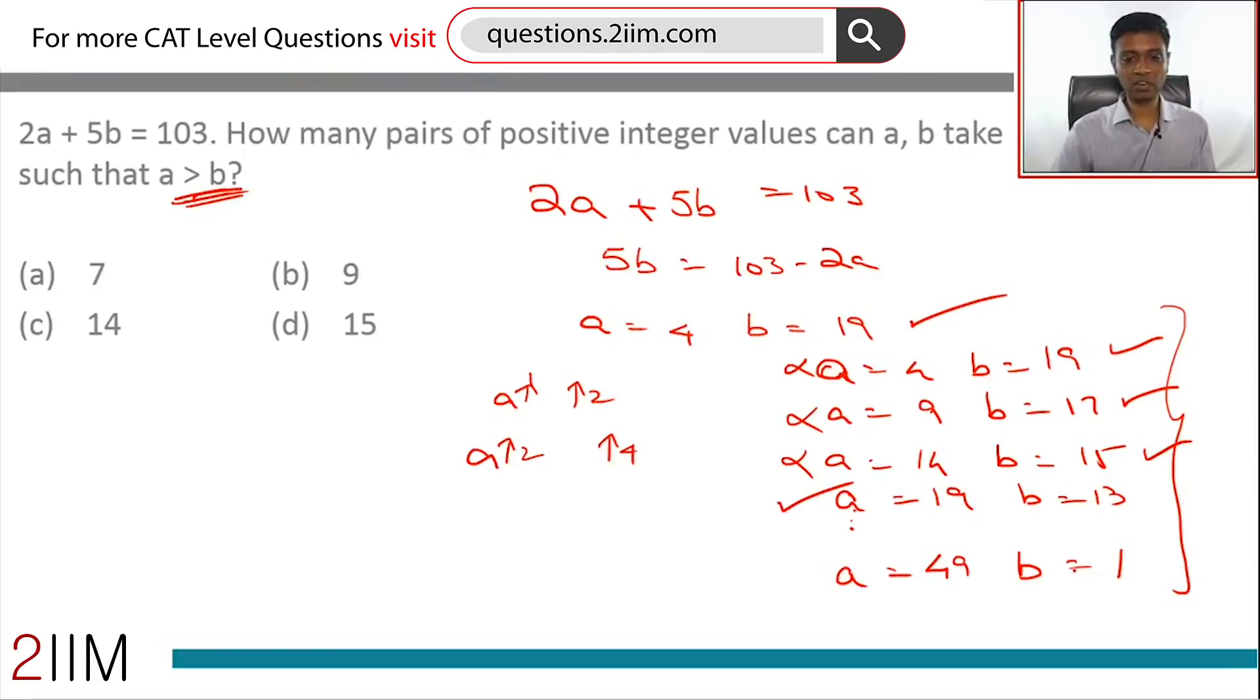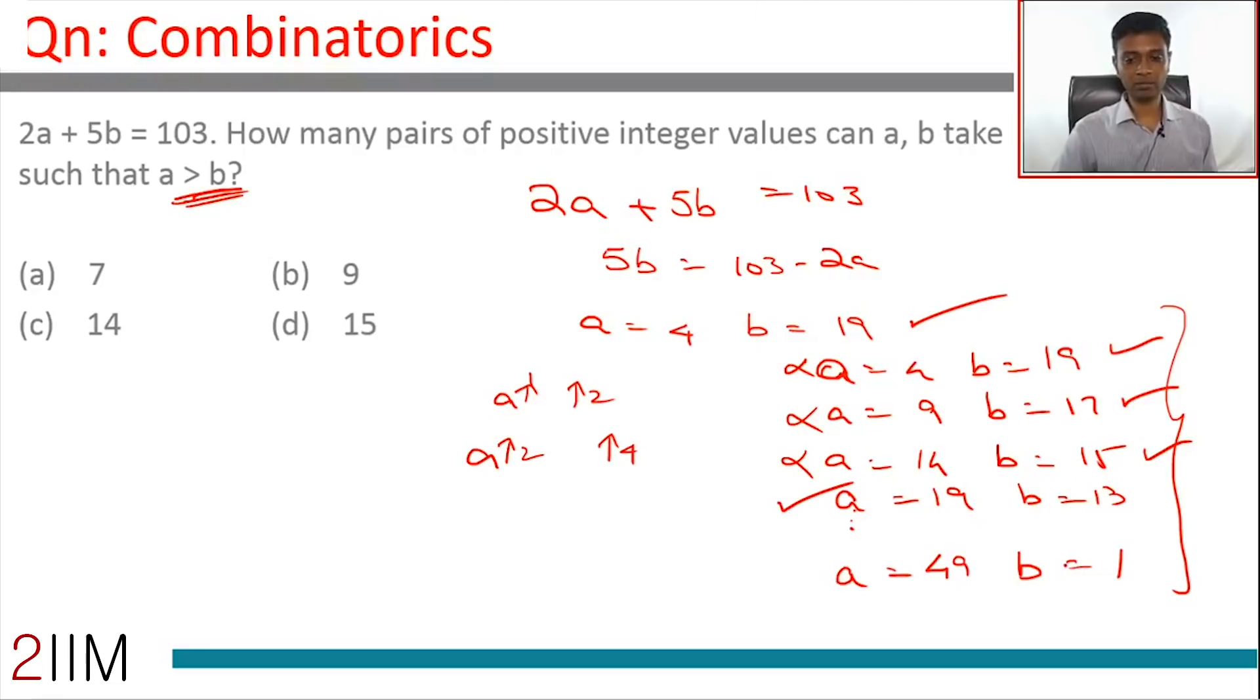If a is greater than b here, for every other value a would be greater than b. So a can take values 19, 24, 29, 34, 39, 44, 49. That's 1, 2, 3, 4, 5, 6, 7. Seven different values are possible such that a greater than b and both are positive integers. So we're looking at choice a.